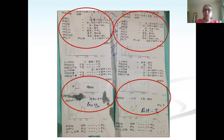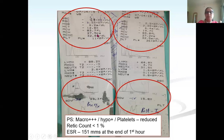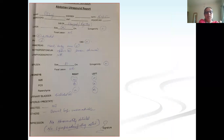CBC: Hb 4.2 g%, platelets 11,000, WBC 2900, RDW normal (15 by CV). MCV was normocytic — suggesting possible bone marrow involvement. On smear: macrocytes, reduced platelets, low reticulocyte count, and markedly elevated ESR. A high three-digit ESR suggests aplastic anemia, malignancy, collagen vascular disorders, or TB. With normocytic pancytopenia, normal RDW, macrocytosis on smear, high ESR, and retic below 1% — bone marrow aspirate and biopsy was performed.